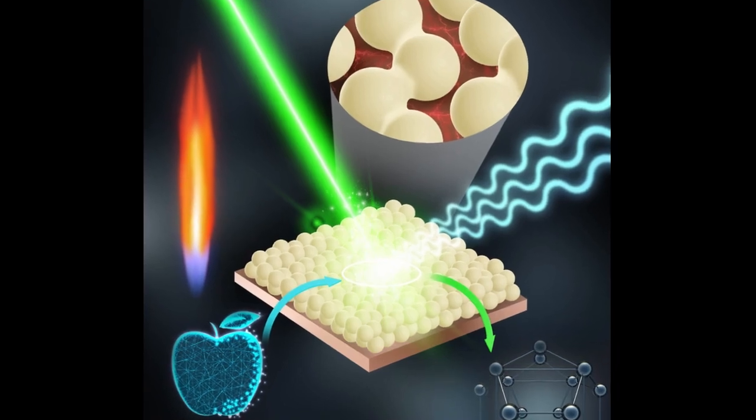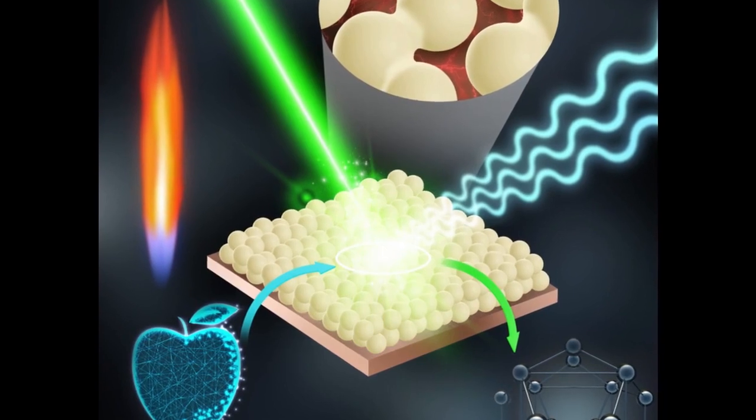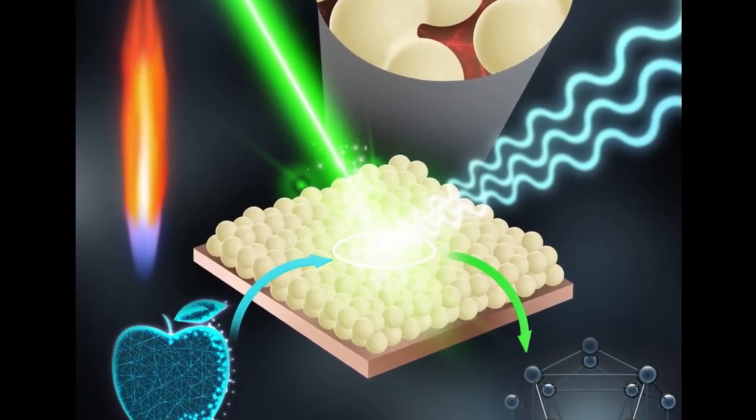The researchers say that the sensors can detect pesticide residues on apple surfaces in a short time of five minutes, without destroying the fruit.